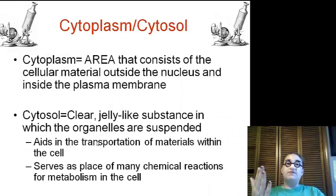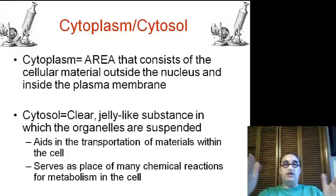The cytoplasm versus the cytosol. The cytoplasm is the area that consists between the cellular membrane and the nucleus. It may consist of organelles, it may consist of the cytosol, which is the jelly substance, and it may consist of our cytoskeleton. But everything that lies within the plasma membrane or cell membrane and the nucleus is the cytoplasm.